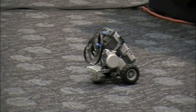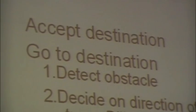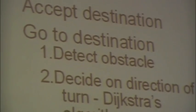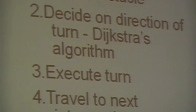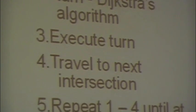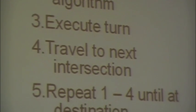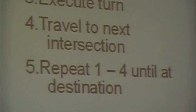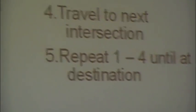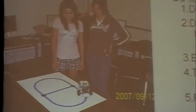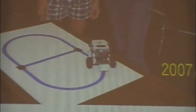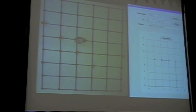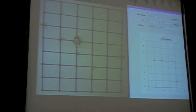A student robot that does this gets a hundred out of a hundred. It looks for an obstacle, then decides on the direction of the turn. If it finds a blocked intersection, it knows that it needs to recalculate the shortest path to the destination using Dijkstra's algorithm. It then executes the turn in the direction to follow the shortest path, minimizing the amount of turning it does to get there.